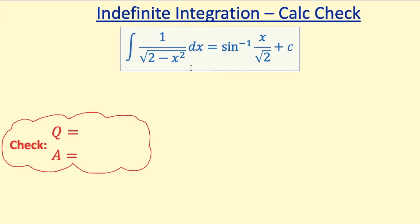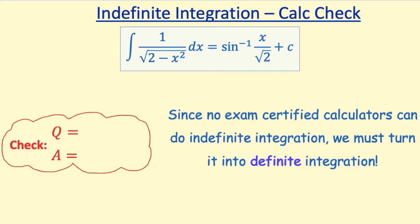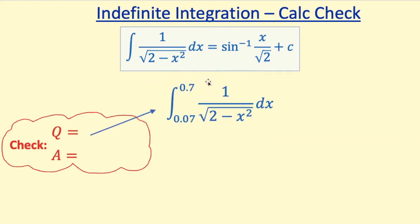Suppose this was our question, as in the first example, and this is the answer that we got. Well, we're going to do a check where we've got this. The question is the left hand side, so this here, and the answer is what we get, our answer to that question. Since no exam certified calculators can do indefinite integration, we must turn our question into definite integration. If your calculator can do indefinite integration, it won't be allowed in the exam. We're going to turn this indefinite integration into definite integration by putting in these limits here. So 0.07 to 0.7. Why have I chosen these limits?